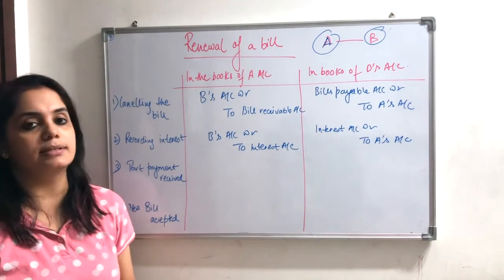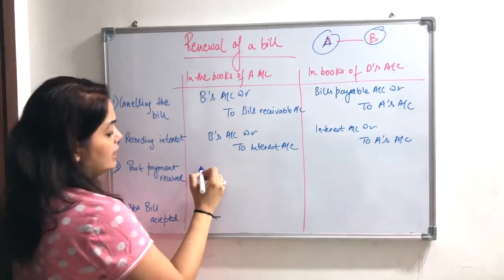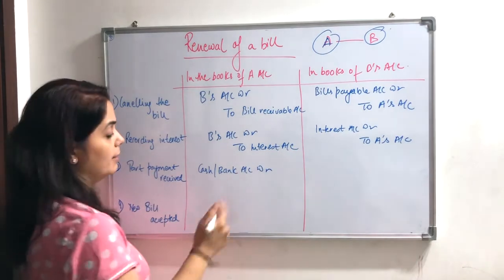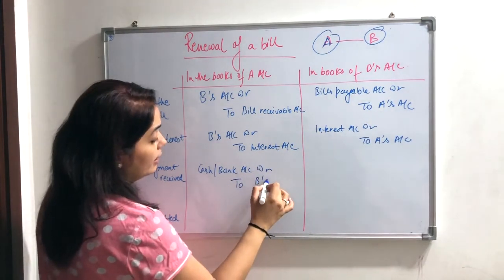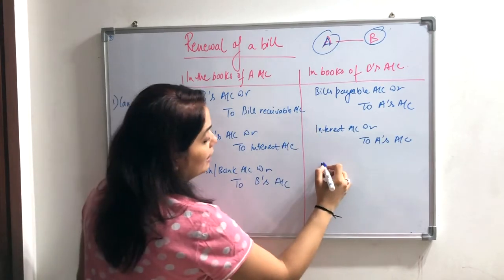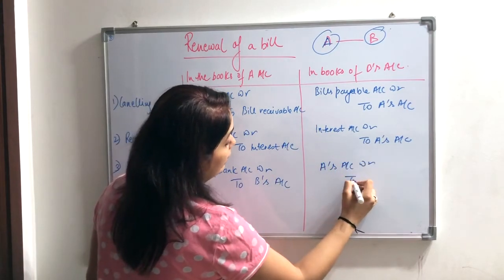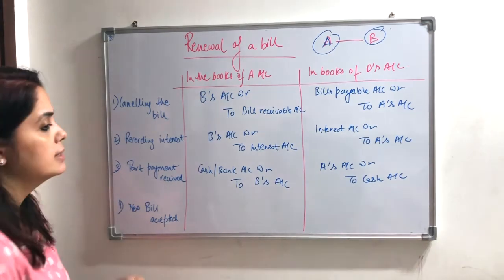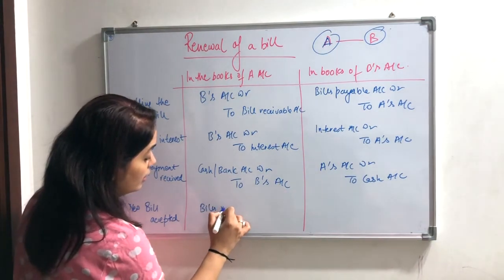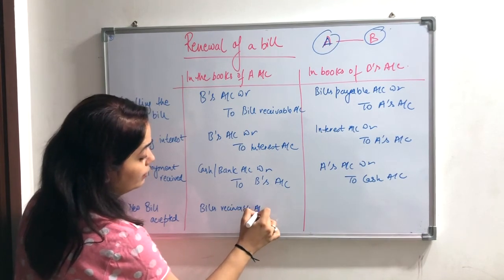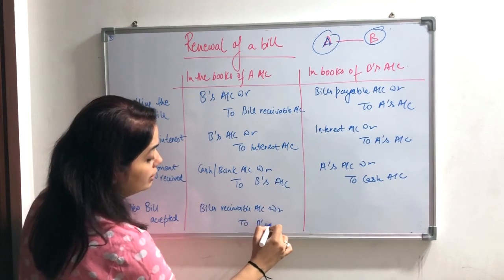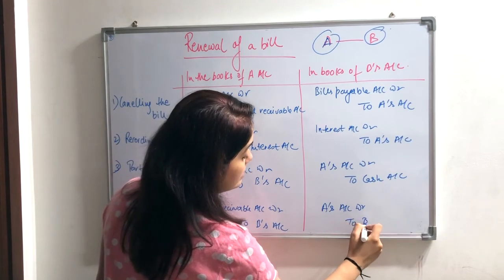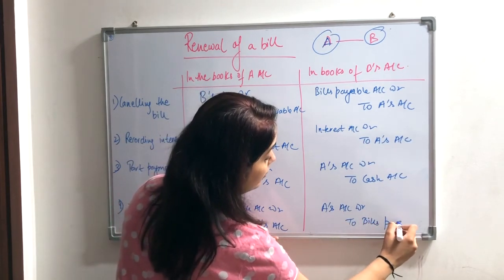Next, if partial payment is received from B, then Cash or Bank account is debited — because we are receiving it, debit what comes in — and it is credited from B's account. B is giving money to A, so Cash account is debited. Next, for drawing the new bill, the entry for the new bill is: Bills Receivable account debited to B's account. In A's books: Bills Receivable debited to B's account. In B's books: A's account debited to Bills Payable account.